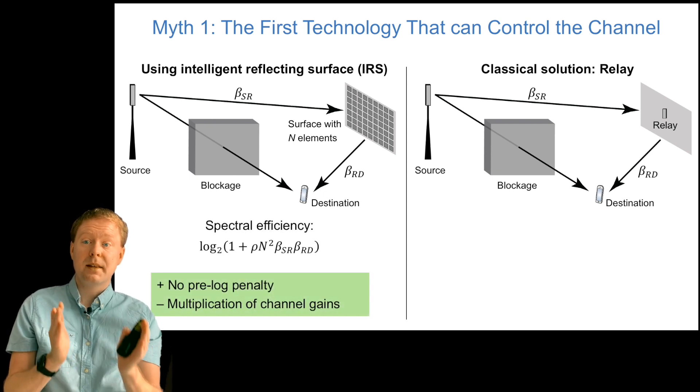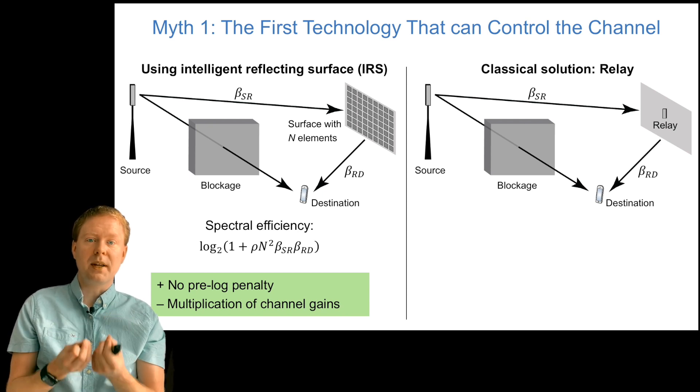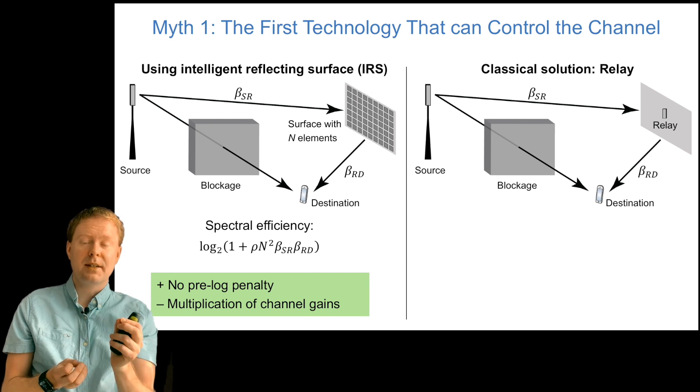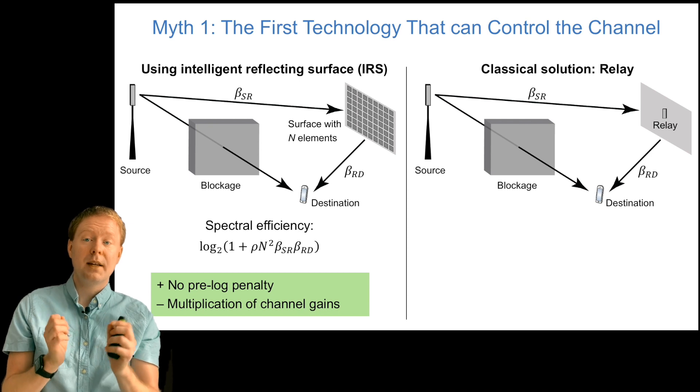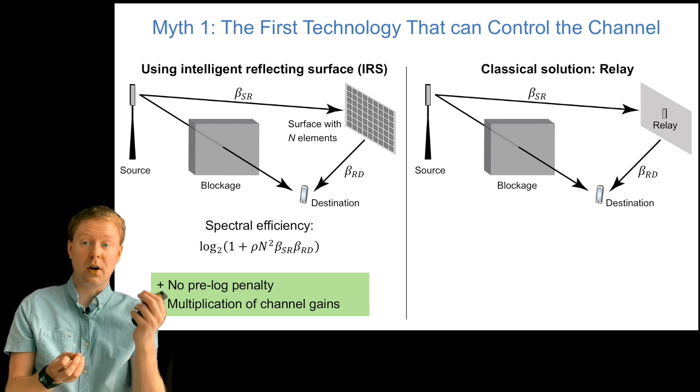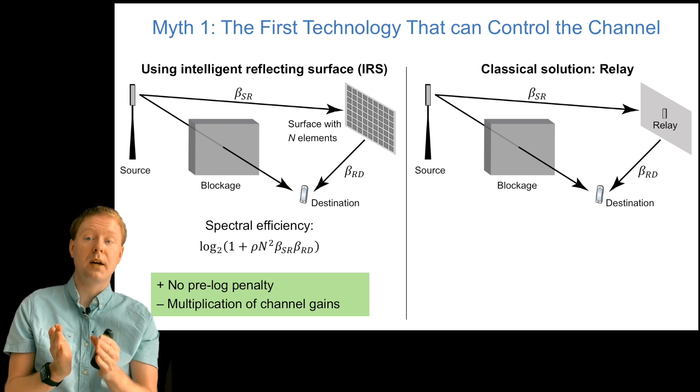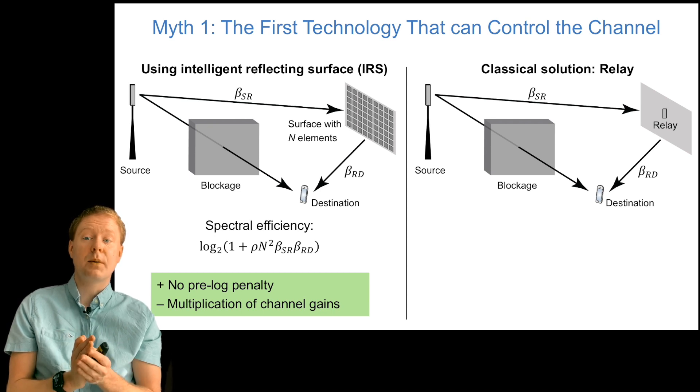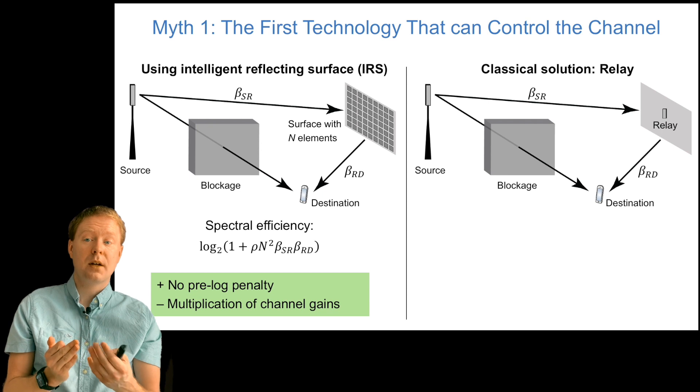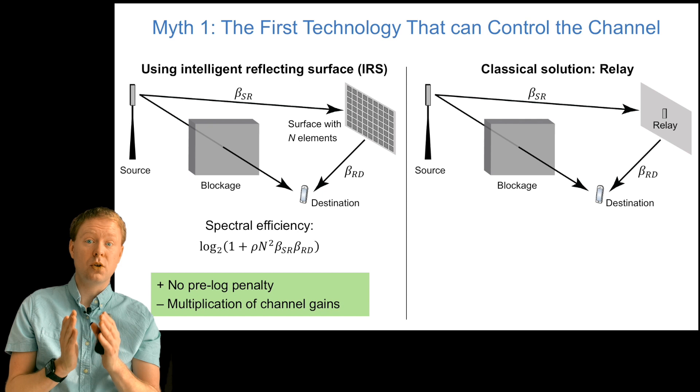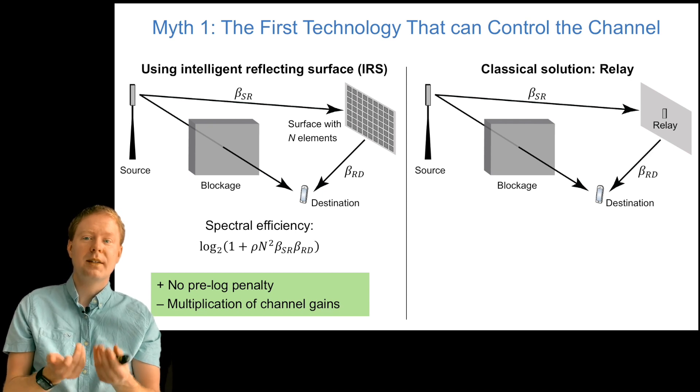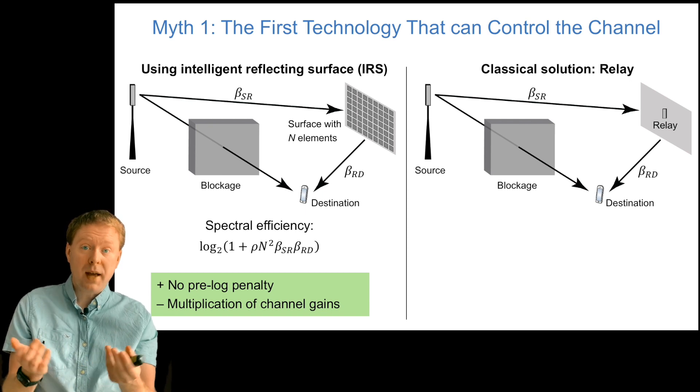Let's compare these different cases. The spectral efficiency with an intelligent reflecting surface: since the signal gets reflected, we get the signal power rho that we transmit from the source, and then n of it is being received at the surface. So we get n times beta-sr. Then we get the beamforming gain from the surface towards the destination, if we configure it properly. So we get another factor n, but we are losing beta-rd on the way to the destination. So we get log2(1 + rho * n^2 * beta-sr * beta-rd). The good thing with this one is that we have no pre-log factor, as you would have in a relay channel. But what is the problem here is that we have the multiplication between two channel gains, two beta terms. If these ones are, say, minus 70 dB in a good case, then if you multiply two of them, we get minus 140. This gives us a very poor channel gain. But we have the multiplication with n^2 as well.